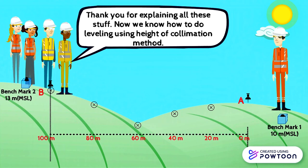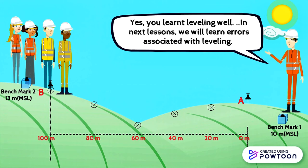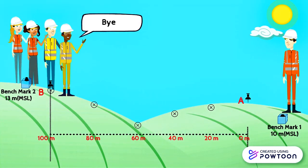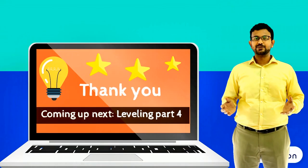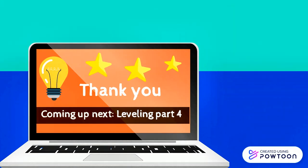Thank you for explaining all this — now we know how to do leveling using the height of collimation method. In the next lessons we will learn errors associated with leveling. Thank you very much for watching this video — coming up next is leveling part 4. Don't forget to subscribe to this channel for more of the very latest videos.